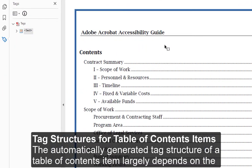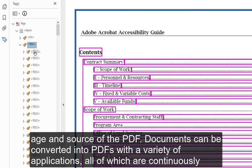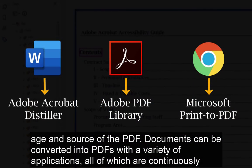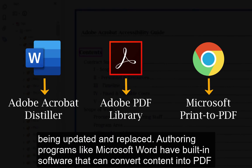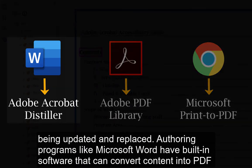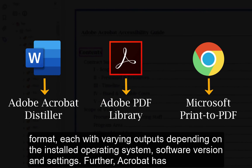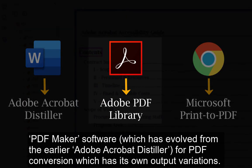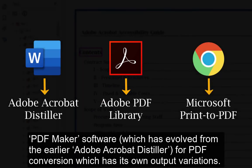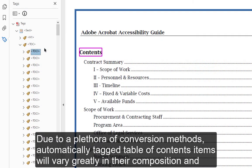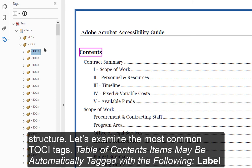A screen reader can identify which table of contents items are the primary sections of the PDF and which are subsections. The automatically generated tag structure of a table of contents item largely depends on the age and source of the PDF. Documents can be converted into PDFs with a variety of applications, authoring programs like Microsoft Word, and Acrobat's PDF maker software. Due to a plethora of conversion methods, automatically tagged table of contents items will vary greatly in their composition and structure. Let's examine the most common TOCI tags.